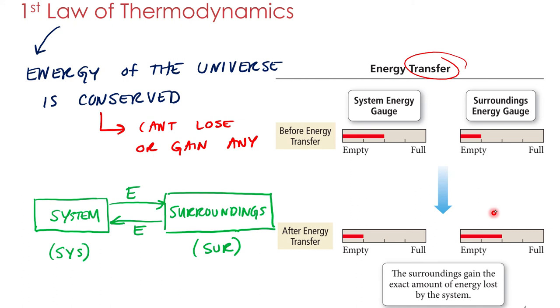Now it could have been the reverse. The surroundings could have started out with a half tank, lost a quarter. Where'd that energy go? It would have been the system that picked it up, or a chemical system or a physical system could have picked it up. So it can go either way, but if something loses some amount of energy, the other one has to gain that exact amount. So that's conserved.